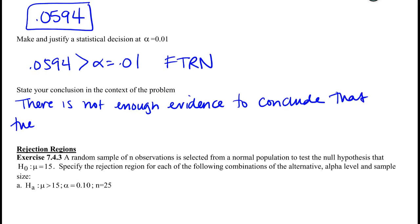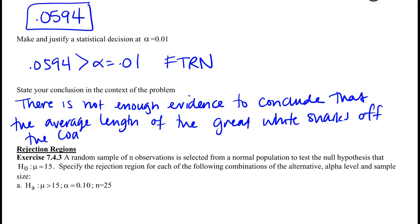What are we concluding? That the great white shark grows much longer, or we could say that the average length of the great whites off the coast of Bermuda is greater than 21 feet. You could say longer than a regular great white shark, it doesn't matter. I'll just finish this with greater than 21, not just 21.9, that was our evidence, 21 feet.